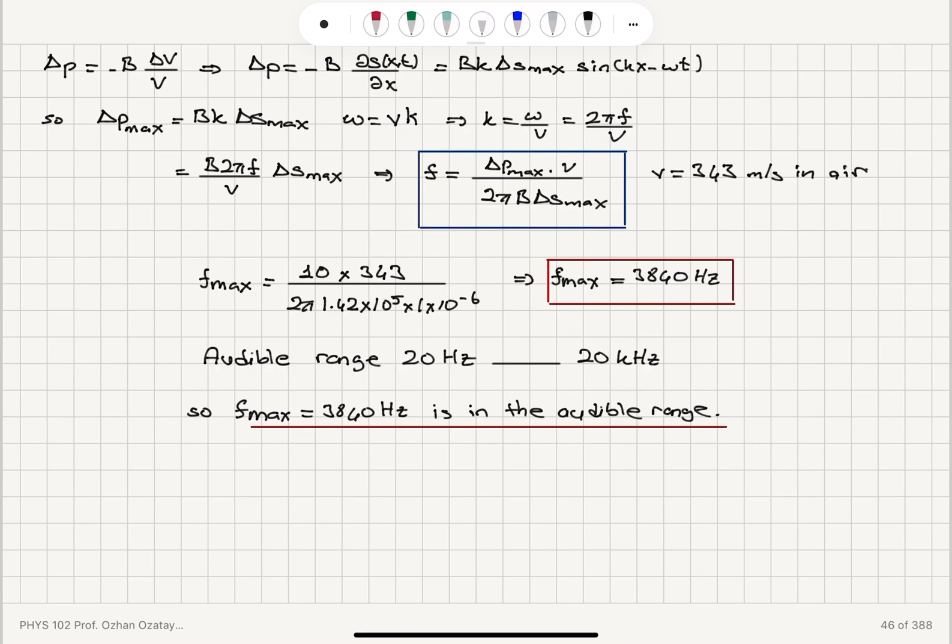And with that we can obtain the frequency. The maximum frequency will be reached when we have maximum pressure. That will be delta P max times V, 10 Pascals times speed of sound in air divided by 2 pi times bulk modulus times the displacement amplitude.